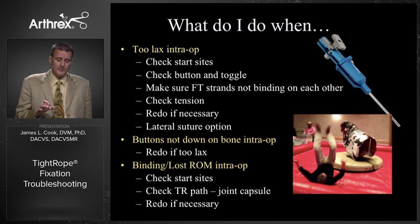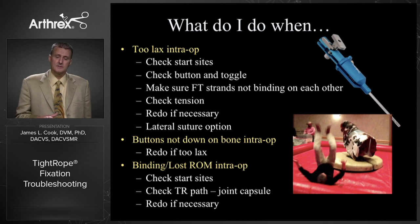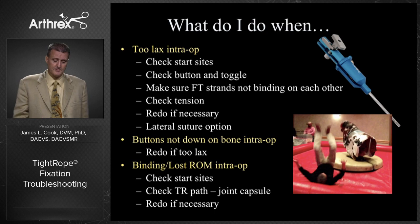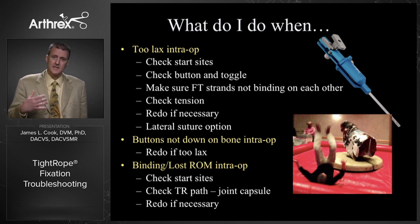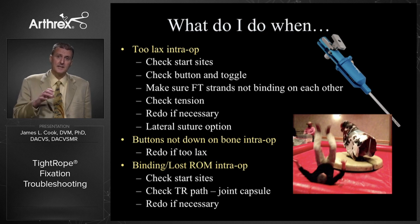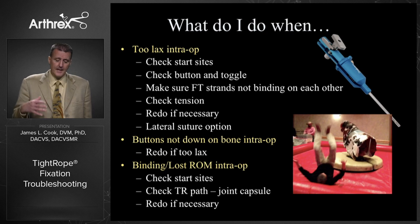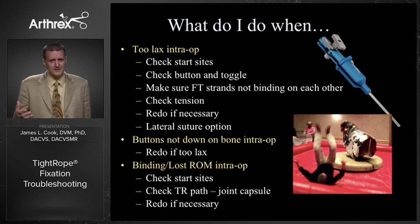If the buttons are not down on bone intraoperatively, this is one you're going to have to redo, even if it means getting another Tightrope out. If you have binding or lost range of motion, check the start sites — isometry can cause binding as well as instability. Check the Tightrope path, as it's sometimes impinging or catching on soft tissues. Check for bone impingement. Check that the button and toggle are not in the joint or across the patellar tendon, quadriceps muscles, or quadriceps tendon group. Redo it if necessary — that's the beauty of Tightrope: you can solve these problems intraoperatively. It's much better to get over your ego intraoperatively than to go to radiology, face the music, and then take the dog back, re-prep, and redo everything.